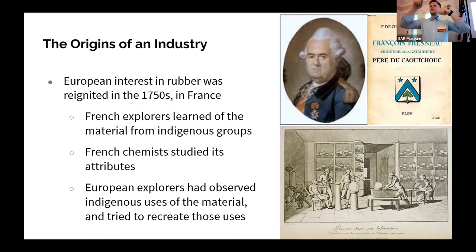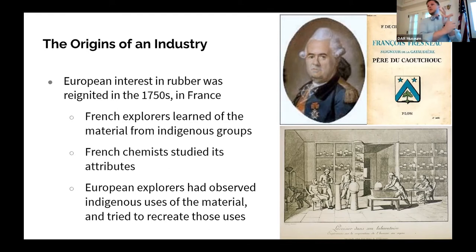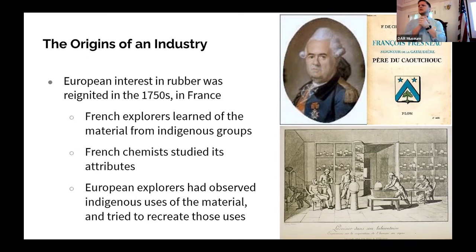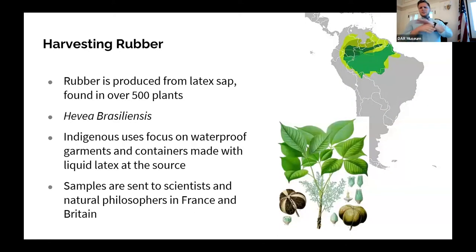All of the provincial academies of science in France ultimately sent papers to the Académie Royale des Sciences, where they were published and accessible. Charles de la Condamine and another French explorer and naturalist, François Fresnot, both noted that this was not only a tropical curiosity but potentially an extremely useful product for any number of manufactured goods of European interest.